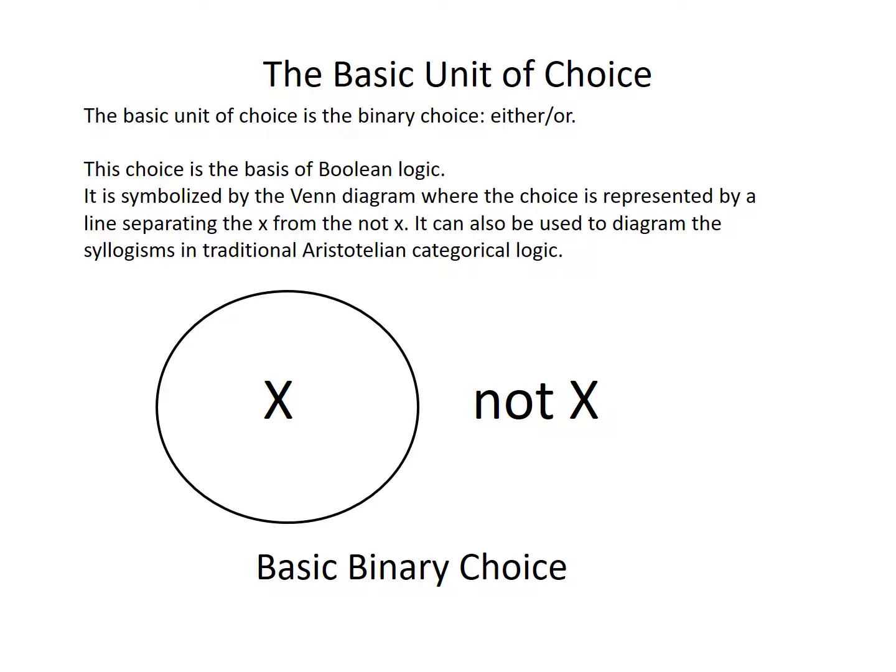The basic unit of choice is the binary choice — either or. This choice is the basis of Boolean logic. It is symbolized by the Venn diagram, where the choice is represented by a line separating the X from the not-X. It can also be used to diagram the syllogisms in traditional Aristotelian categorical logic. Inside the circle is X, outside the circle is not-X — thus you have the basic binary choice.